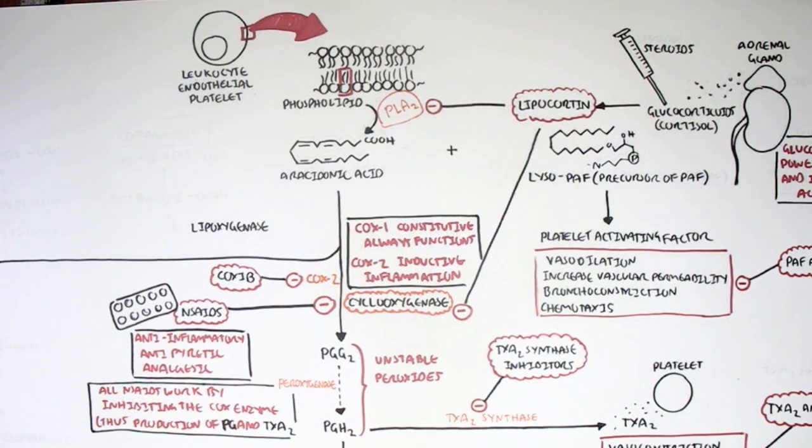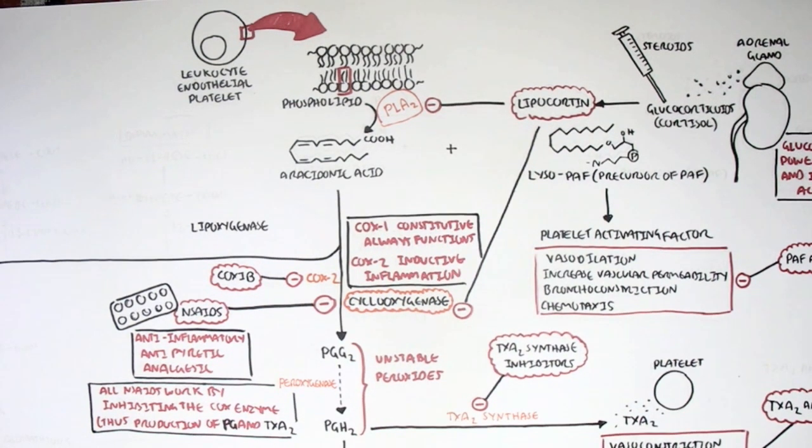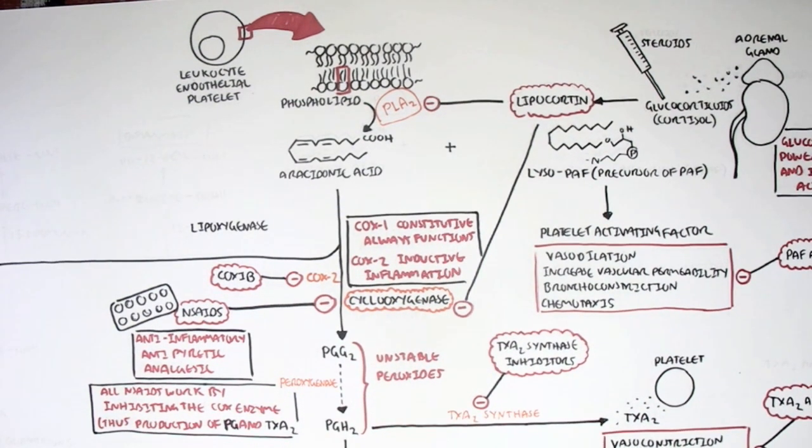So now we know the pathway from arachidonic acid to prostaglandins and thromboxanes through the enzyme cyclooxygenase and what drugs can be used to prevent the production of these inflammatory mediators. Now let's follow the second main enzyme which is lipoxygenase.